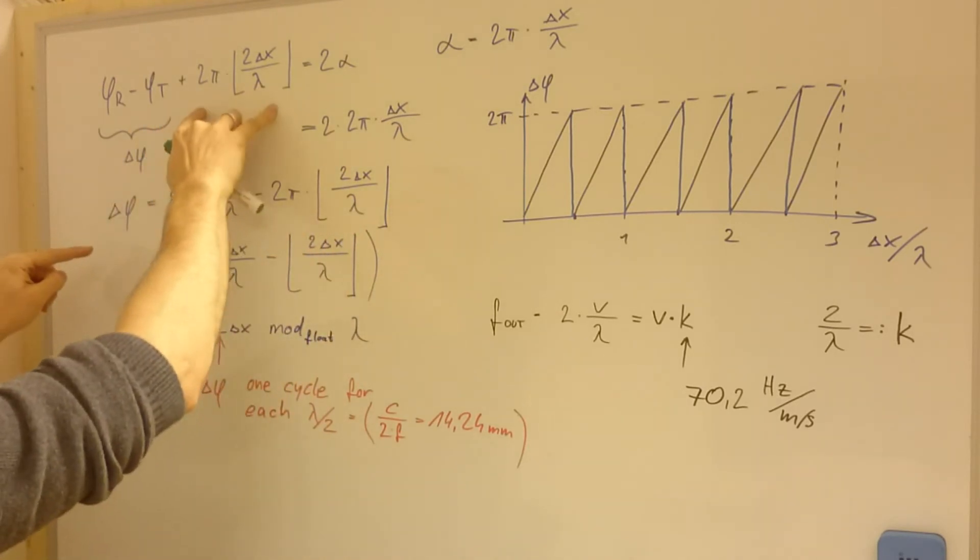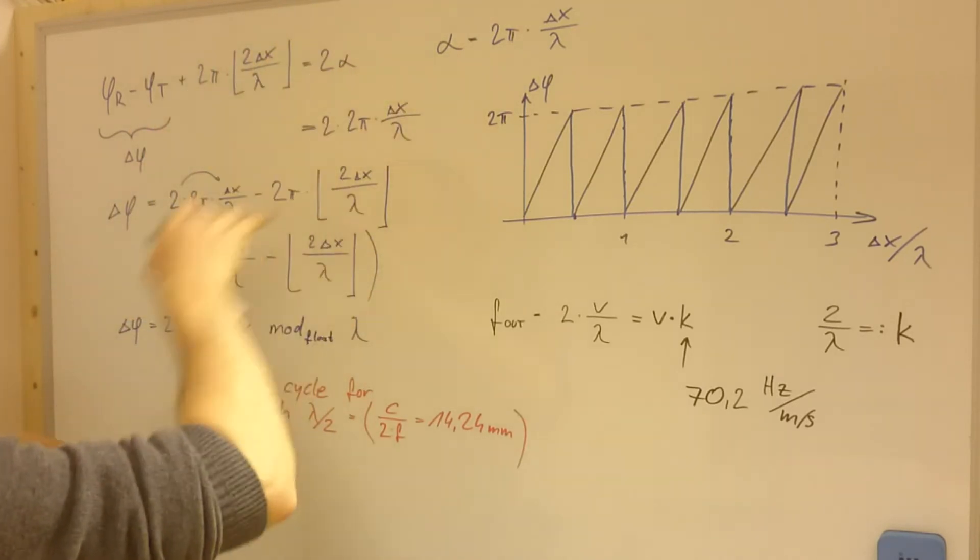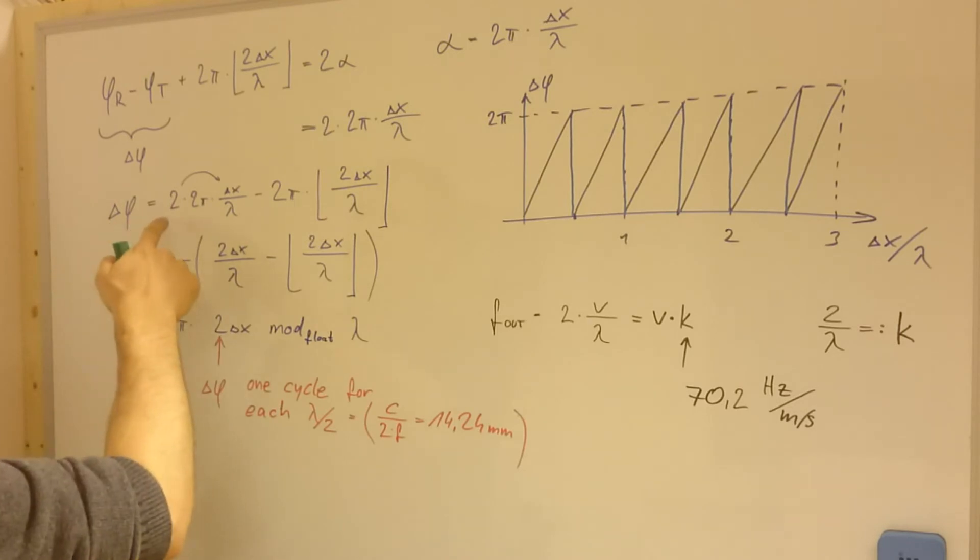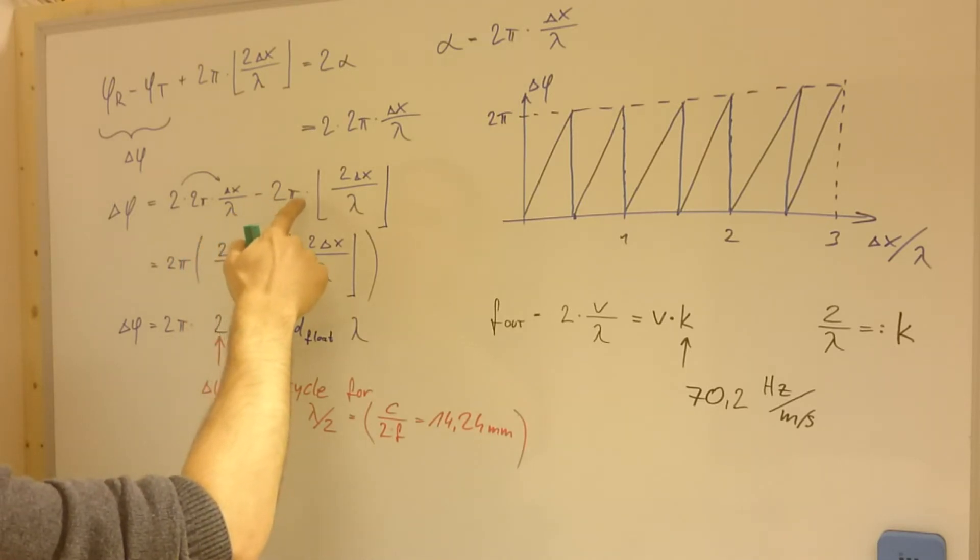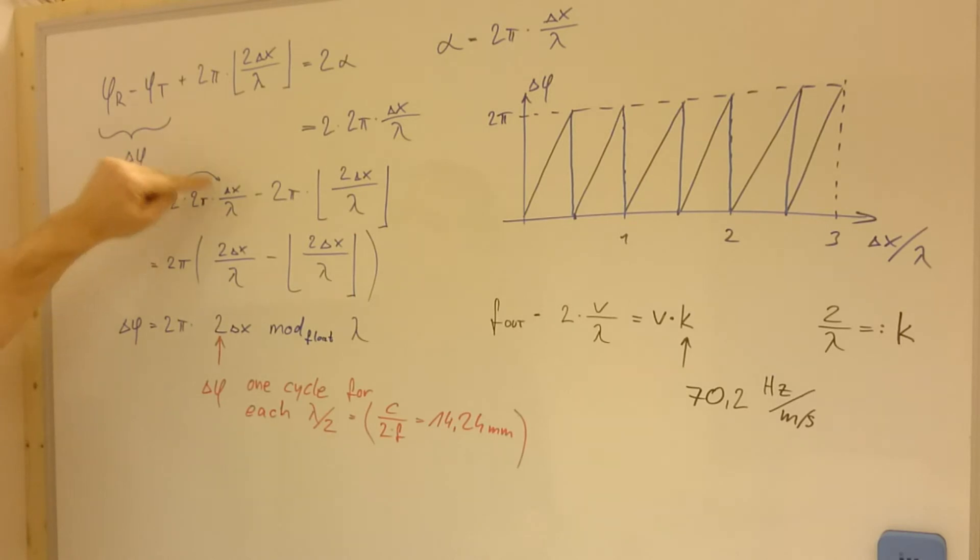And bring this part over here, we have then delta phi is 2 times 2 pi delta x over lambda minus 2 pi radians times the integer number of wavelength of the distance. We put this tool up here, and then extract the factor 2 pi radians, and then we get this.